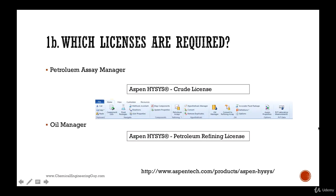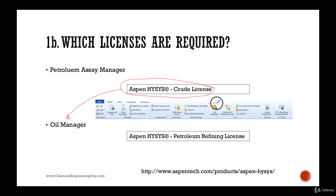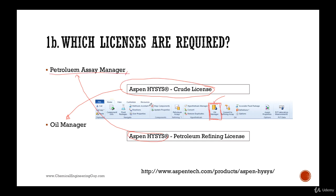We will be working mostly with two licenses: the Aspen HYSYS Crude license, which is for the oil manager. If you want to know if you have that license active, just open Aspen HYSYS and go to the physical property environment. Once you're there, if you see the little barrel with the oil drop that says oil manager, then you're good to go. We will also be working with the Aspen HYSYS Petroleum Refining System license, which goes for the petroleum assay manager — it's much more powerful for identification and modeling of very precise petroleum assays.